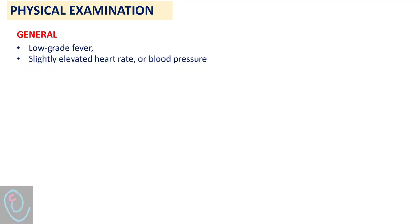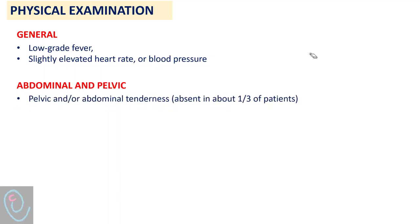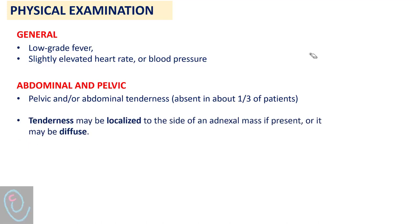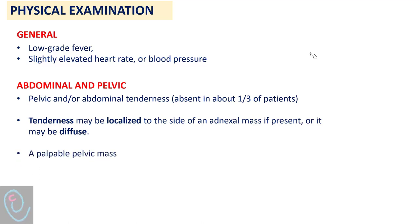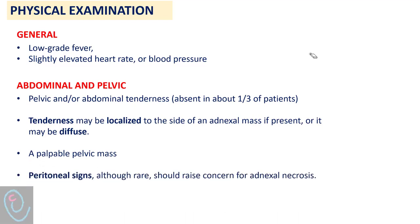During general examination, we may find a low-grade fever and slightly elevated heart rate or blood pressure. During abdominal and pelvic examination, most patients demonstrate pelvic and/or abdominal tenderness; however, it is absent in about one-third of cases. Tenderness may be localized to the site of the adnexal mass if present, or it may be diffuse. A palpable pelvic or abdominal mass may or may not be present. Peritoneal signs, though rare, should raise concern for adnexal necrosis.